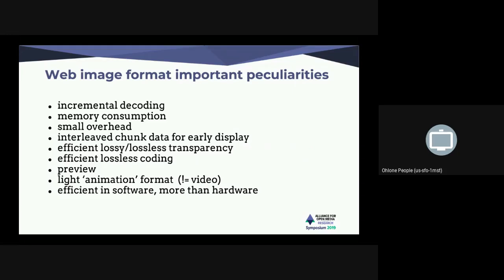Memory consumption is also important. As mentioned, you're decoding 20 images at the same time when you land on a page, and you need to be very memory efficient. If you instantiate a video codec for each image, and each codec instantiates all the reference buffers, you'll consume a lot of memory just for single images. WebP scales memory as a function of the image width, using a scanline prediction approach so we never have the full buffer in memory at the same time.